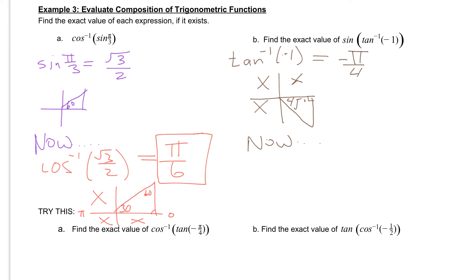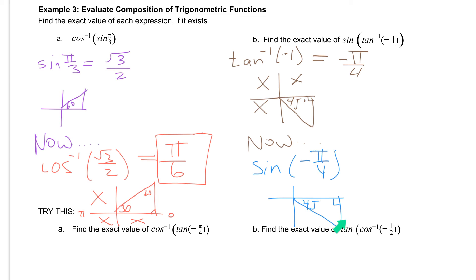Now we can figure out what is the sine of negative pi over 4. Again, we're just evaluating the sine of negative pi over 4. Negative pi over 4 is going to be in our fourth quadrant, and this is a reference angle of 45 degrees. The sine value is going to be the y value across from 45 degrees. Since it's in a negative direction, our answer is going to be negative square root of 2 over 2.